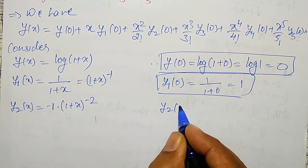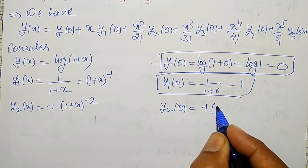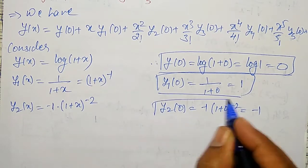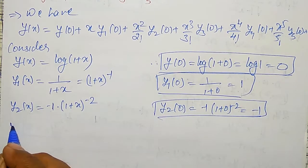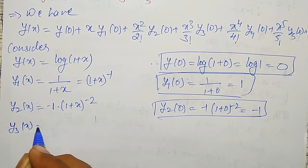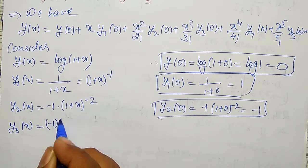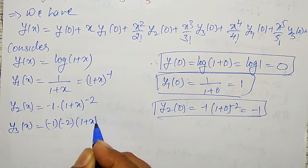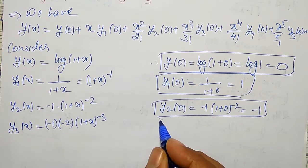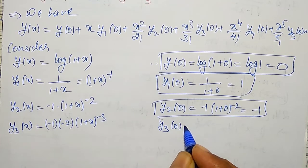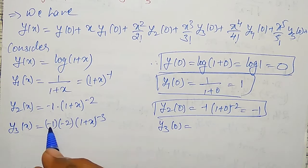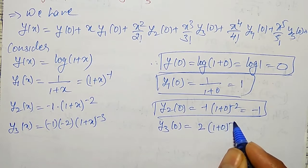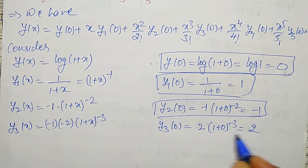So y₂(x) = -1·(1 + x)⁻², and y₂(0) = -1·(1 + 0)⁻² = -1. Similarly, y₃(x) = (-1)(-2)(1 + x)⁻³, so y₃(0) = (-1)(-2)(1 + 0)⁻³ = 2.